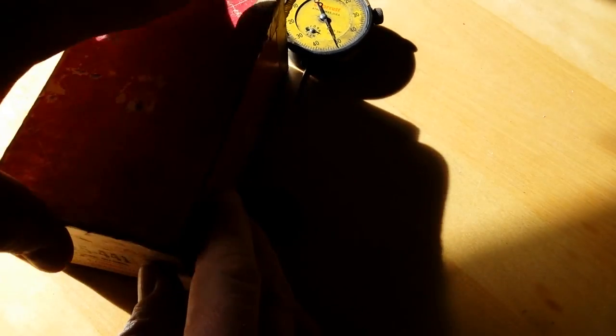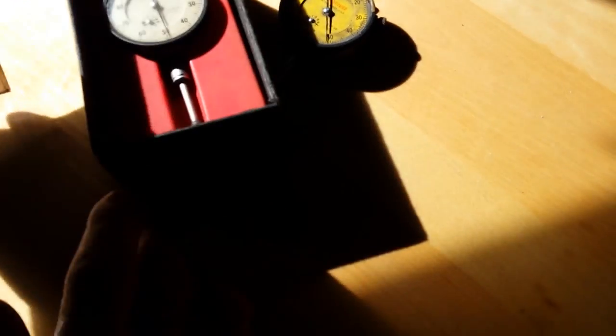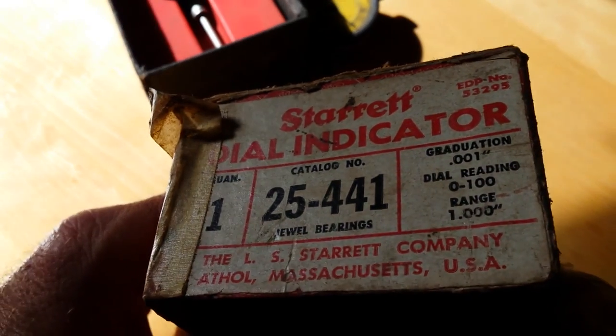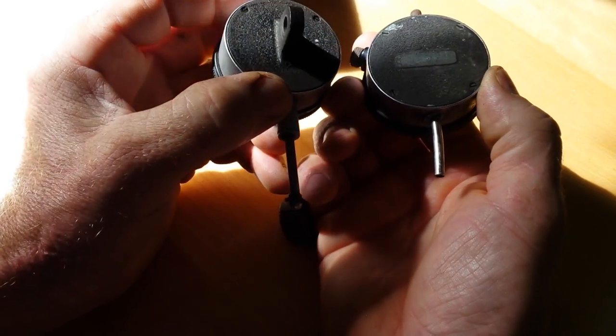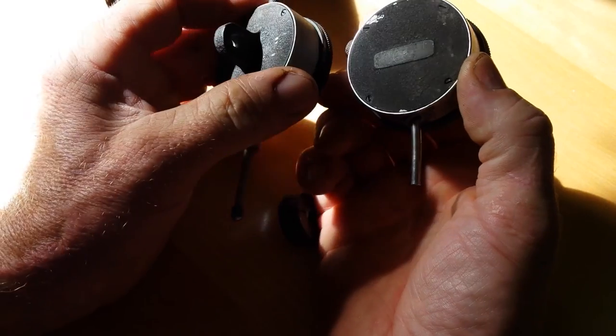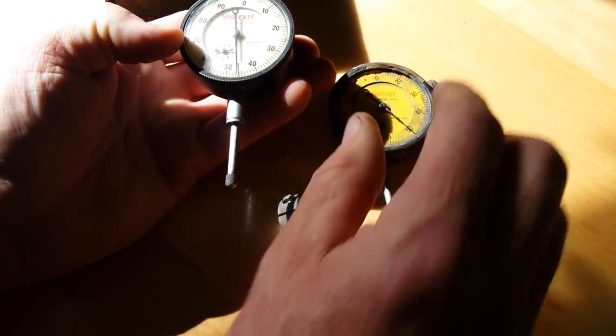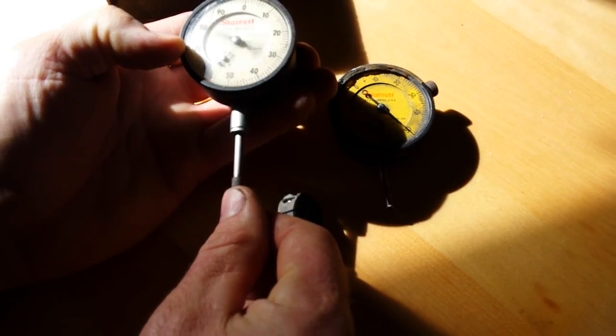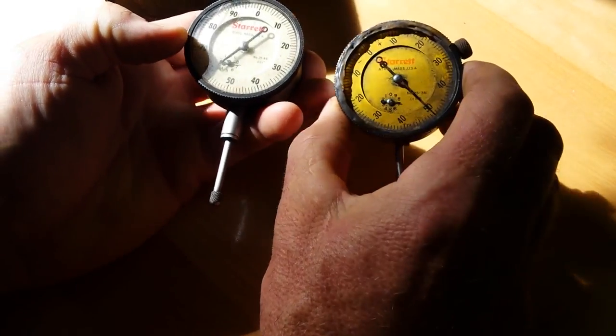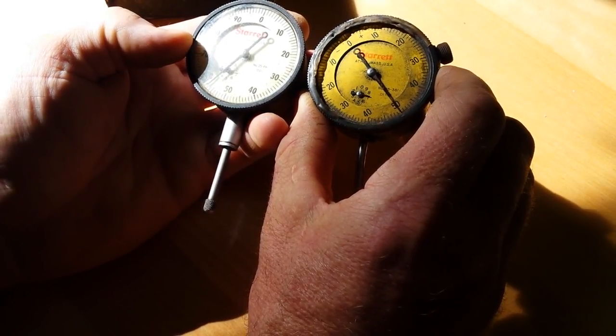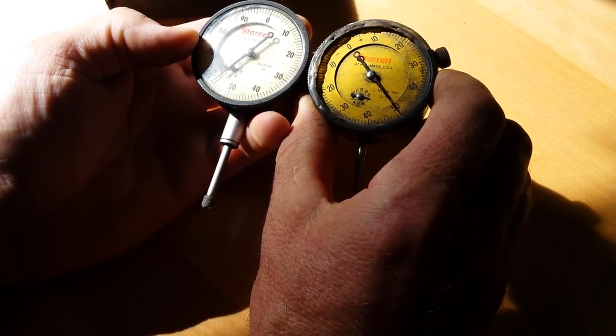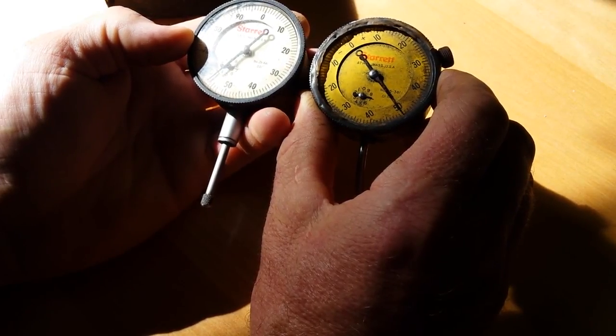Here's a Starrett 441, 25-441—that's the only other Starrett dial indicator I have. It's very similar; I bet the back would fit right on. It's got longer travel though. Almost identical, just metric. Yellow is usually metric and white is standard.